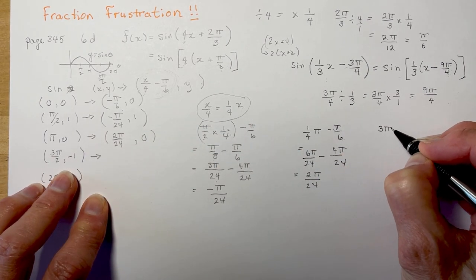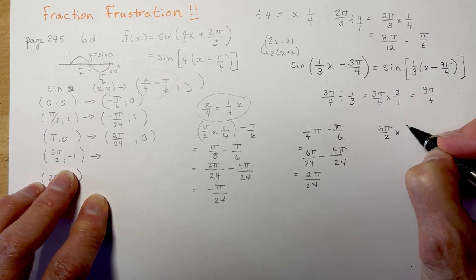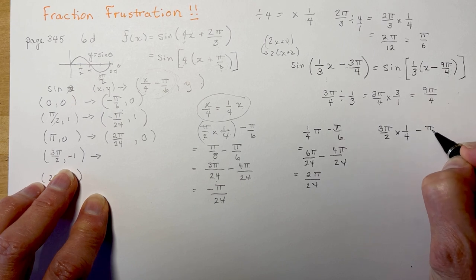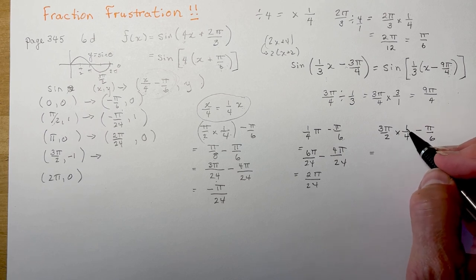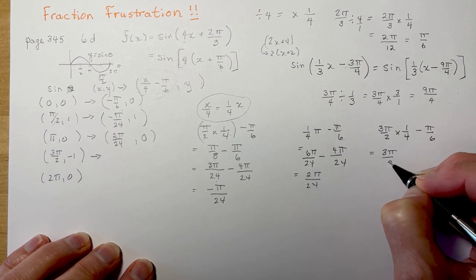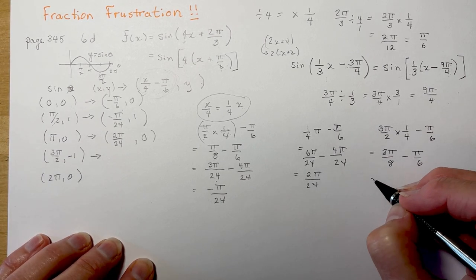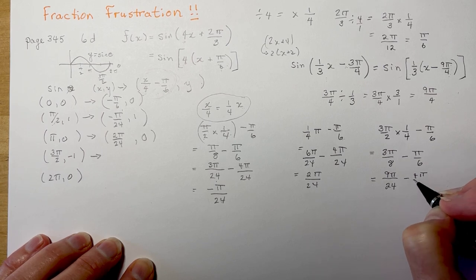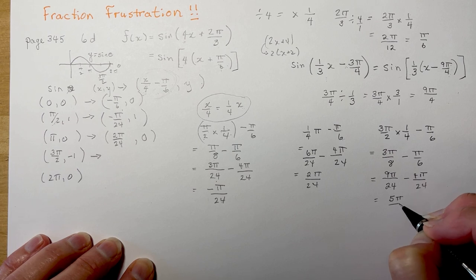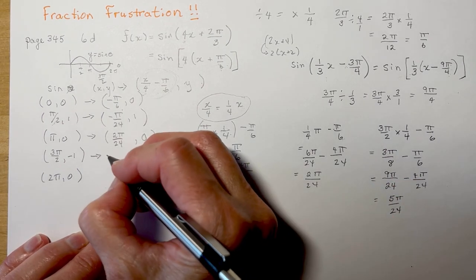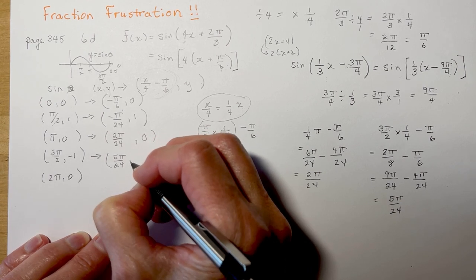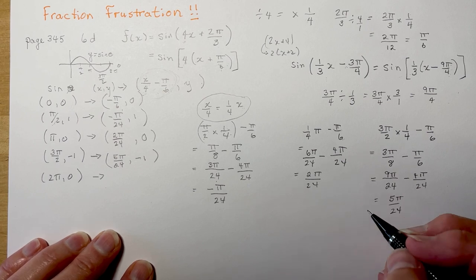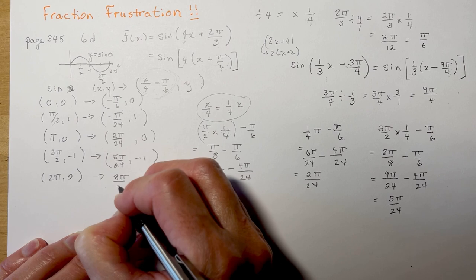For x = 3π/2: multiply 3π/2 by 1/4, which gives 3π/8, then subtract π/6. Converting to 24ths: 3π/8 becomes 9π/24 (multiply by 3), and π/6 becomes 4π/24 (multiply by 4). So 9π/24 minus 4π/24 = 5π/24, and y = −1. I highly recommend using a scrap piece of paper to avoid silly mistakes. The last point comes out to 8π/24 with y = 0.